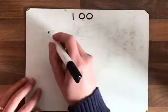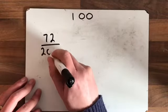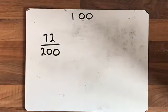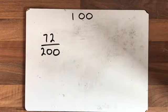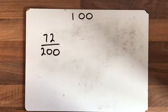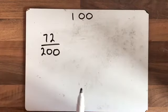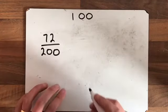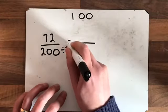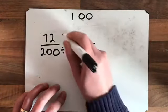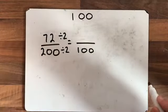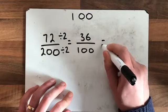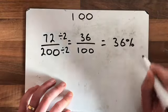I'll write another one out for you to have a go at — you can pause the video to try it yourself. 72 over 200: what is that fraction as a percentage? We can see 200 is larger than 100. What do we do to 200 to get it down to 100? Divide by 2. 200 divided by 2 is 100, so we do the same to the numerator: 72 divided by 2 is 36. The answer is 36%.